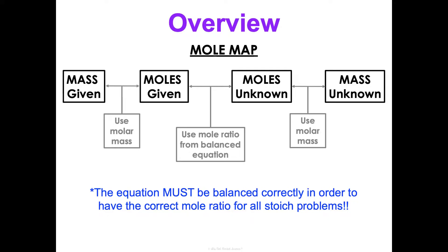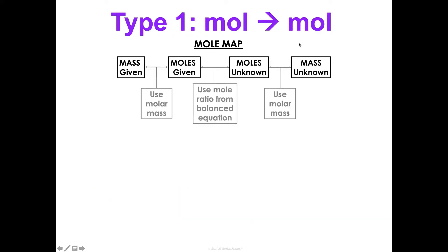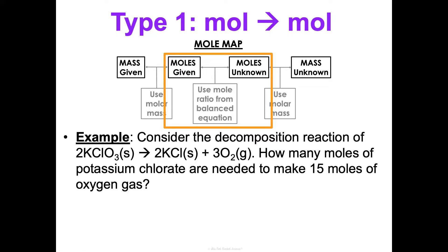So now we're just going to walk through every type of problem: moles to moles, mass to moles, mass to mass, that kind of thing. First, a type of problem where we're going from moles to moles — I give you some moles and I want the moles of something else. So we're just sitting right here on our mole map. Let's do an example.